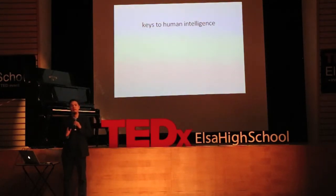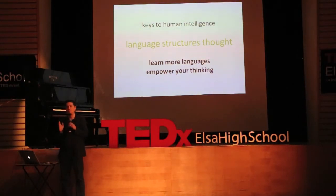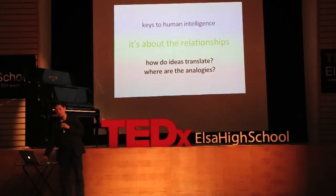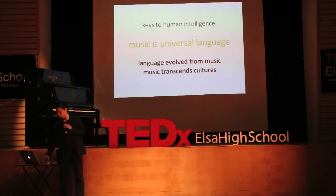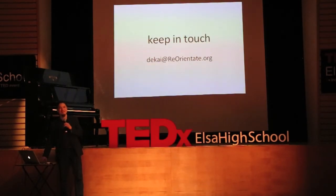Let me sum up. Here are the keys to human intelligence. First, language structures thought — and if you learn more languages of any type, it empowers your thinking. It's about the relationships: how do ideas translate across different representations, where are the analogies? Music is a universal language; human language evolved from music, and music transcends cultures, so you can communicate across cultures much more easily with music. We're always interested in people who are interested in these topics — just keep in touch with us. Thanks very much.